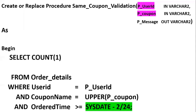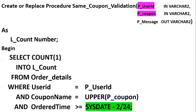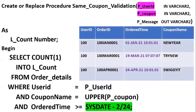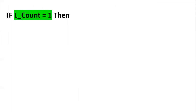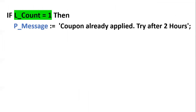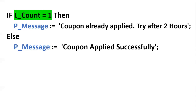The key condition is checking whether the user placed an order within the last two hours, achieved by order_time >= SYSDATE - 2/24. The result is stored in l_count. Then, IF l_count = 1, that means the user applied the coupon within two hours, so pMessage = 'coupon already applied, try after two hours'. IF l_count = 0, the user has not placed an order within two hours, so pMessage = 'coupon applied successfully'.